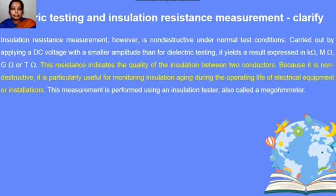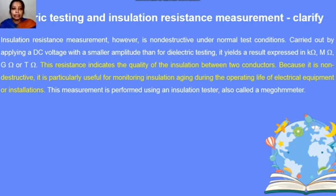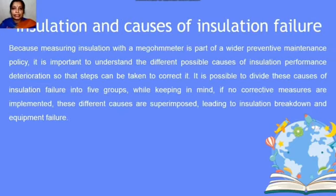Insulation resistance testing, however, is a non-destructive test. A DC voltage of relatively lower magnitude is applied, and the result is in kilohms, megaohms, gigaohms, or teraohms. The resistance indicates the quality of the insulation between two conductors. Because it is non-destructive, it is practically useful for monitoring insulation aging during the operating life of electrical equipment. The measurement is performed using an insulation tester, also called a megaohm meter or megger.